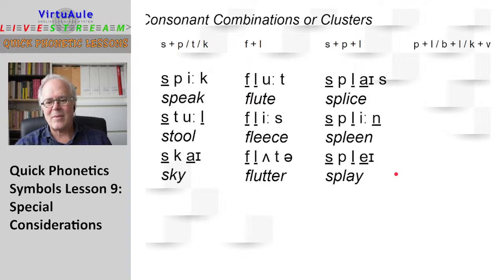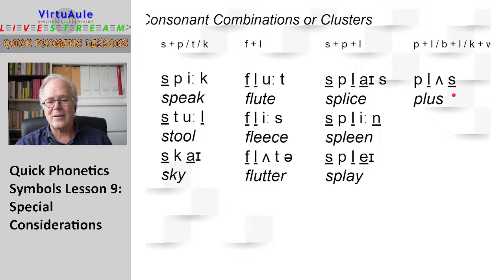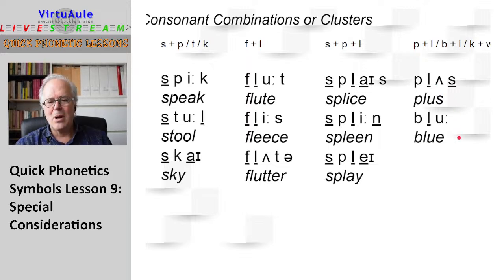Then we have some other combinations: P and L, B and L, K and W. Plus — this is a short sound, it's a plosive. Then we have the long L and short sound with the vowel: plus. You can make the L long but that's really not very natural. Plus. Blue. Quiet.